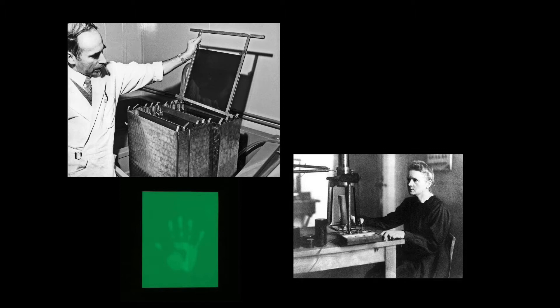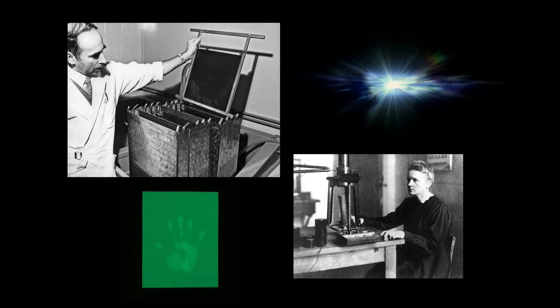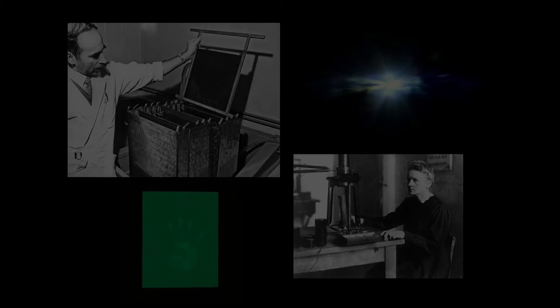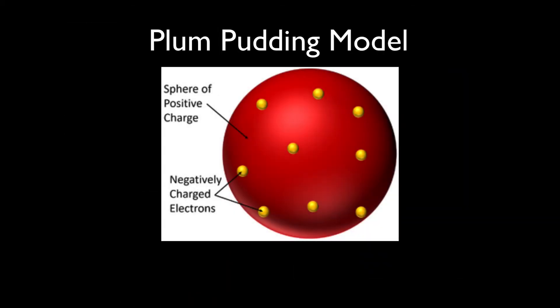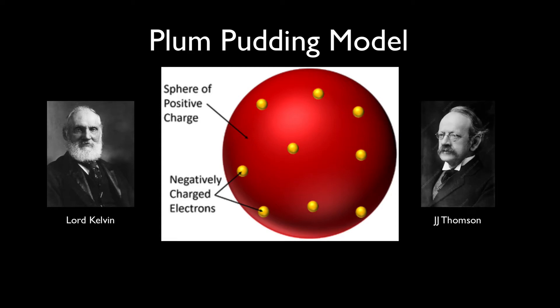These early experiments pointed to mysterious subatomic particles and rays exiting atoms which broke the long-standing belief that atoms were the smallest divisible building block. One of the prevailing theories of the atom's inner structure was the Plum-Pudding model put forth by Lord Kelvin and later modified by J.J. Thompson, who had discovered the electron in 1897. Thompson's theory suggested an even distribution of negatively charged electrons surrounded by a volume of positive charge. It was likened to having negatively charged plums embedded in a positively charged pudding, hence the Plum-Pudding name.